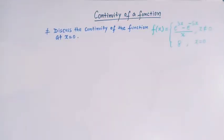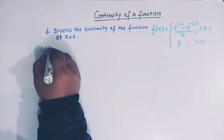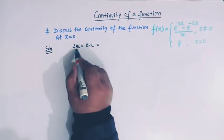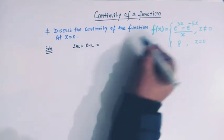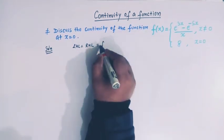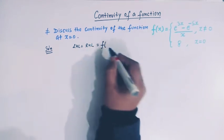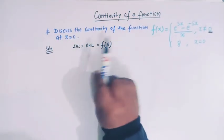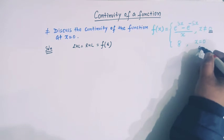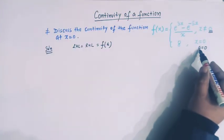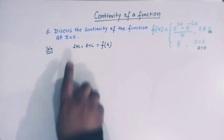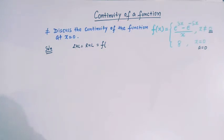We know that a function is said to be continuous if the left hand limit is equal to the right hand limit, and these two limits exist and are equal, and further these two limits are equal to the value of the function at that particular point. So here we can take the point as a. In this case, a is equal to 0, so the point of consideration is x equal to 0. We have to show that the left hand limit equals the right hand limit, both limits exist, and these two limits are equal to f(0).